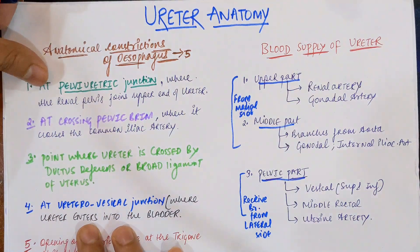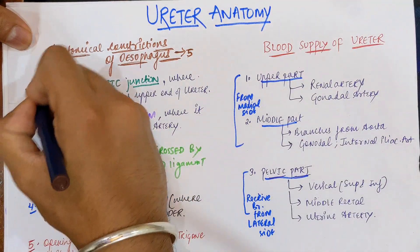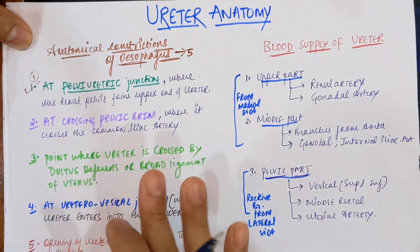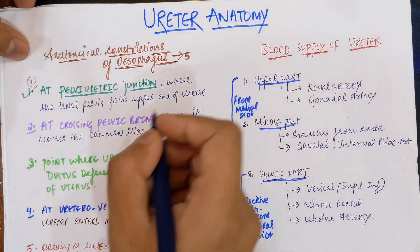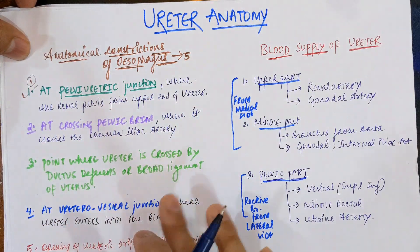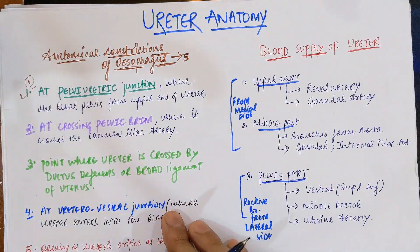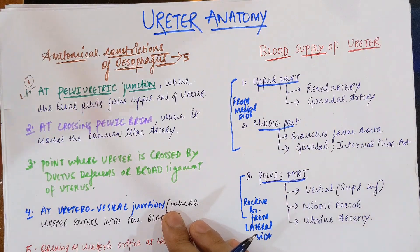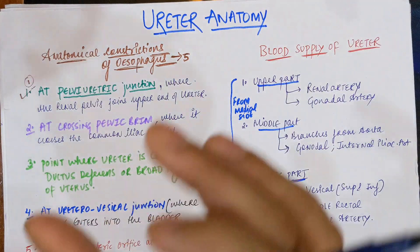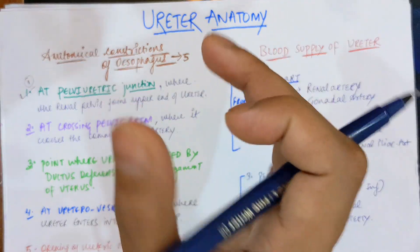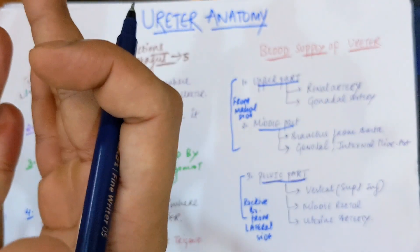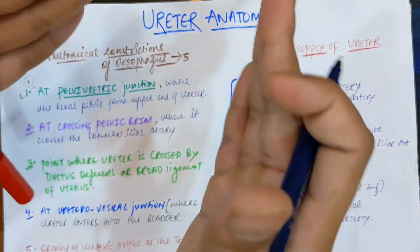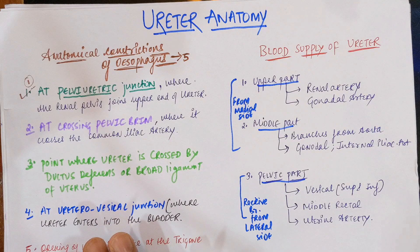The first constriction is at the pelvi-ureteric junction. This is the junction where the renal pelvis joins the upper end of the ureter — in other words, where the ureter actually starts. That area is called the renal pelvis of the kidney. Where the upper end of the ureter and the renal pelvis join together, there is a constriction called the pelvi-ureteric junction, and this is the first constriction.